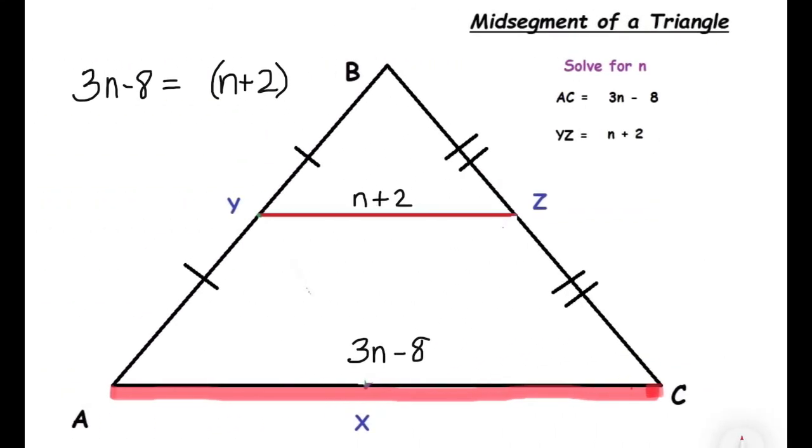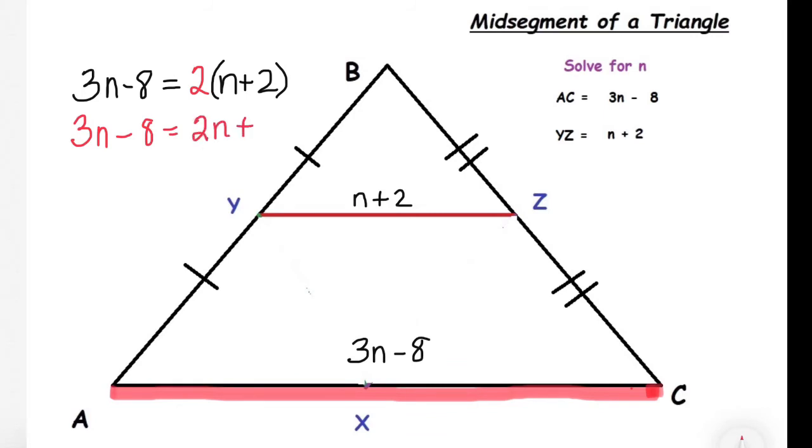Let's take a look at this question where we're solving for N. AC is equal to 3N minus 8, and YZ equals N plus 2. I can set them equal to each other, but N plus 2 is half the distance of 3N minus 8. So I'm going to have to multiply this by 2. My new equation is going to be 3N minus 8 equals 2N plus 4.